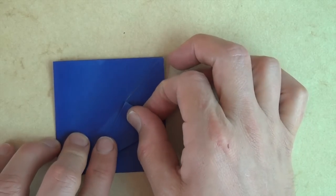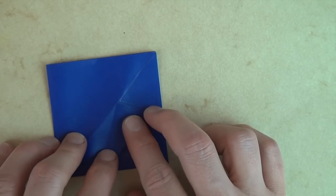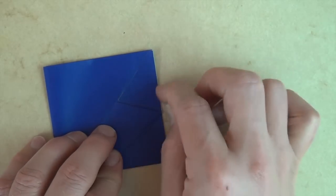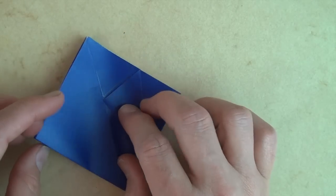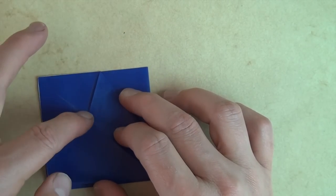And this fold doesn't actually need to be perfect. You could fold it up here or down here. It'll just change the shape of the garbage can. So let's fold it like that. And let's do the same thing on this side. So let's fold this point to right here.